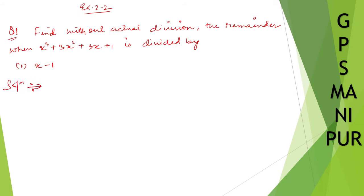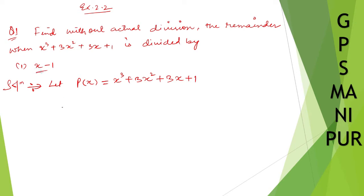We can do Roman number 1 by using the Remainder Theorem. Let p(x) = x³ + 3x² + 3x + 1. Now find the zeros of (x - 1): set x - 1 = 0, so x = 1.